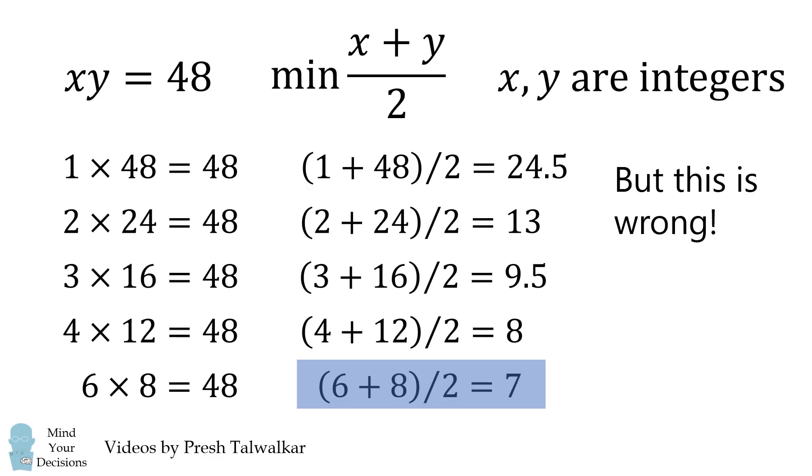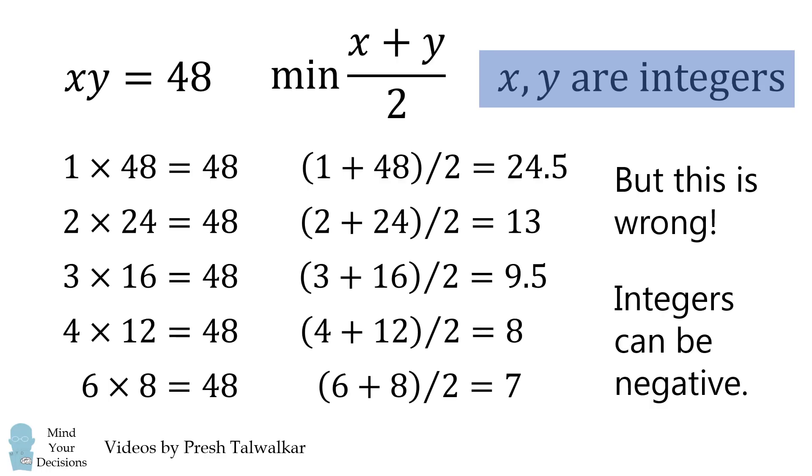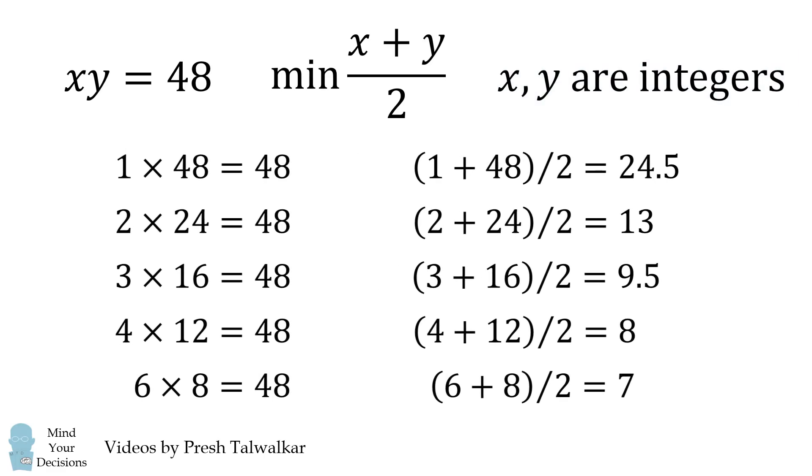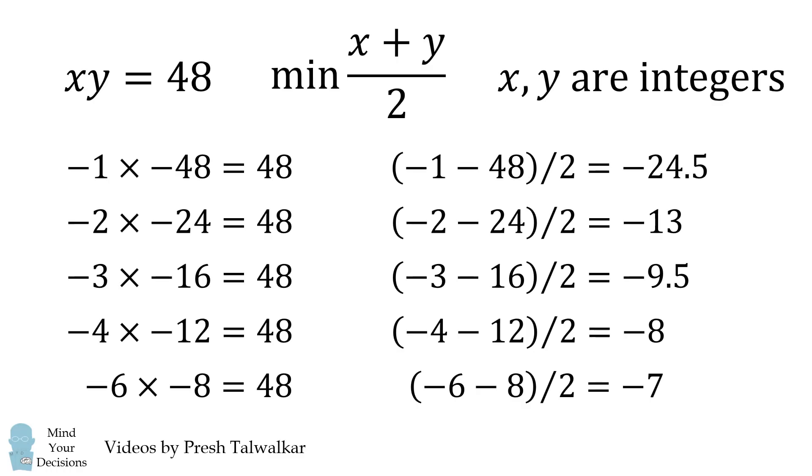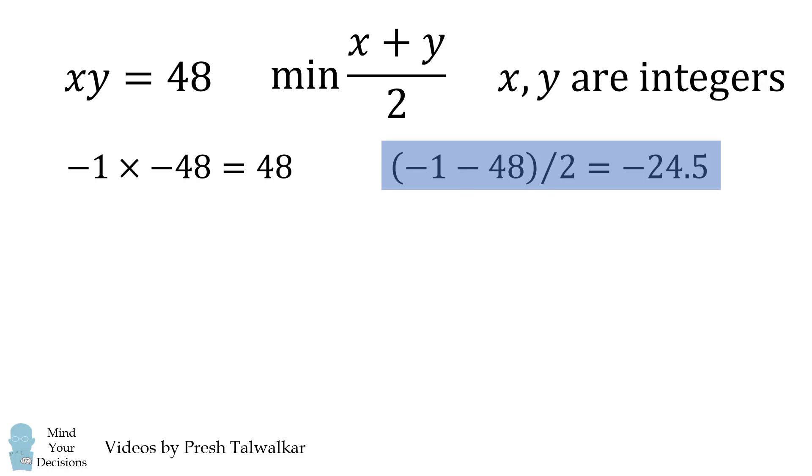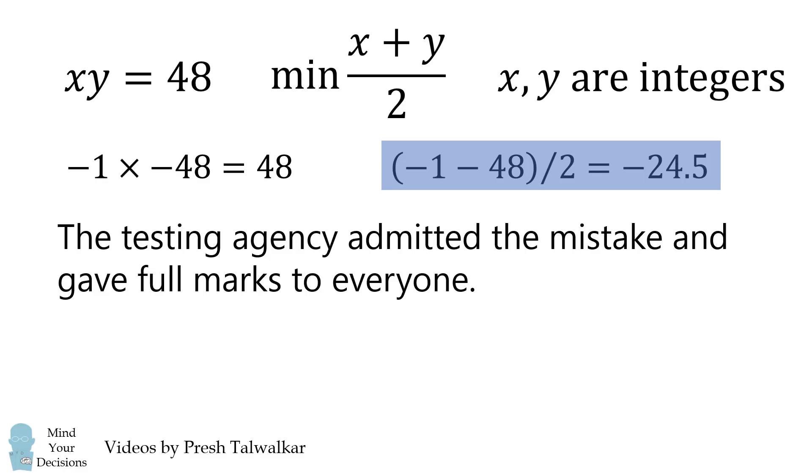But this is not the correct answer. The reason is that X and Y are integers. Therefore X and Y can also take negative values. Notice if we multiply both X and Y by negative 1, we also get valid possibilities. And the lowest possible value for their average will be negative 24.5. And that's the correct answer to this question. The testing agency admitted the mistake and gave full marks to everyone.